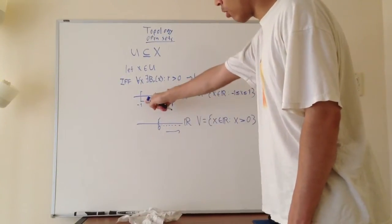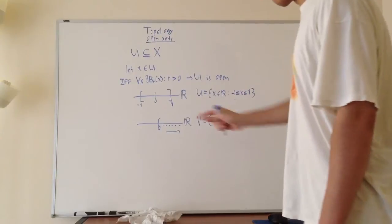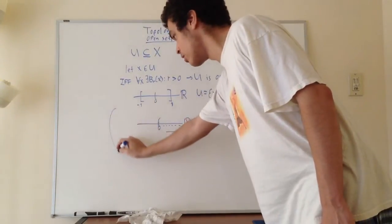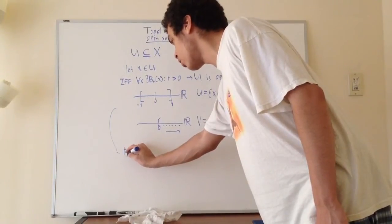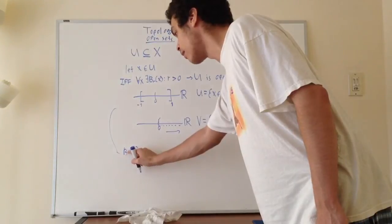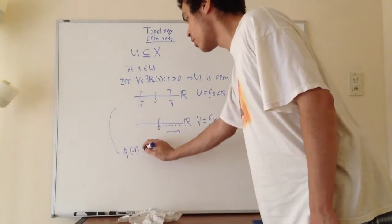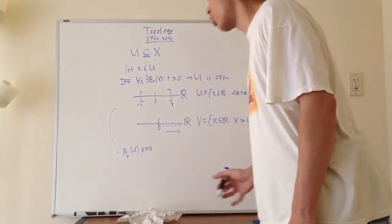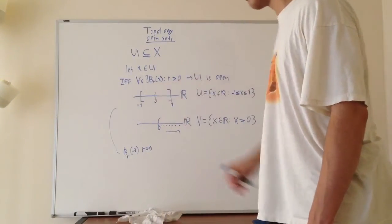Can we draw an open ball around negative one, or one for that matter? The answer is no, we can't. Because if we want to draw a ball around negative one, the radius is not going to be anything greater than zero. The radius is going to be equal to zero.